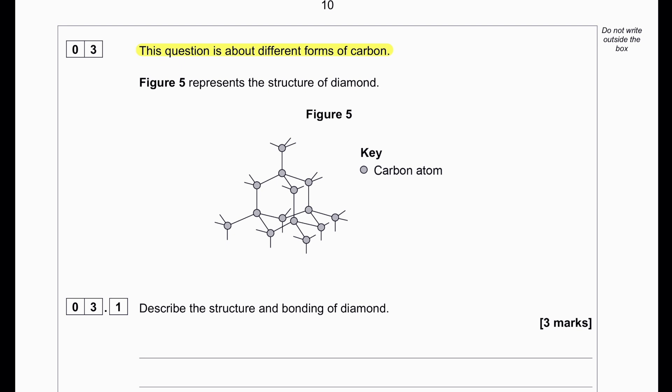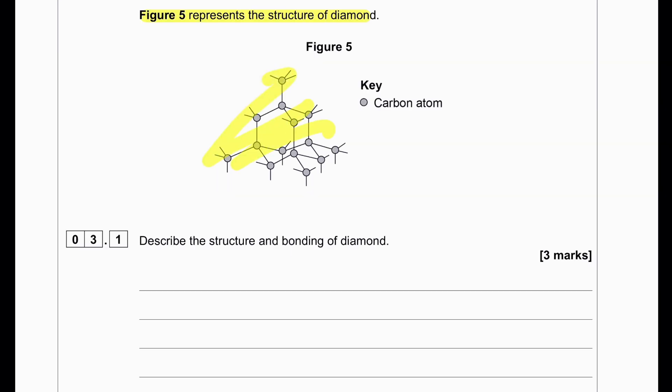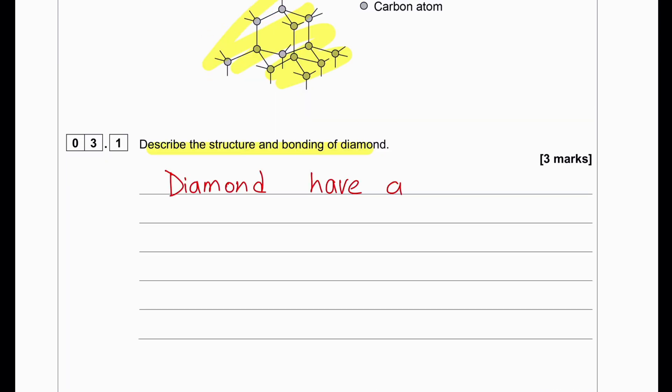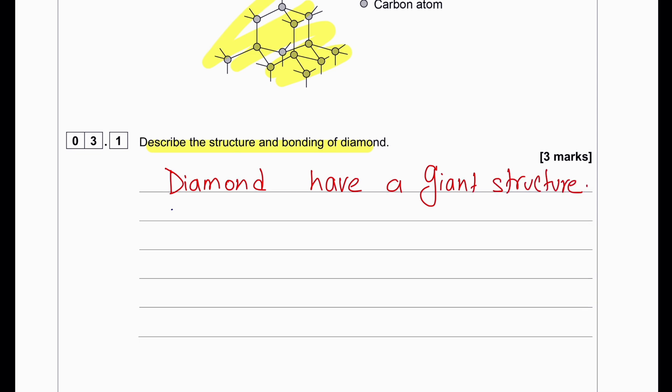This question is about different forms of carbon. Figure 5 represents the structure of diamond. Describe the structure and bonding of diamond. Diamond has a giant structure with covalent bonds. Each carbon is bonded with 4 other carbon atoms.